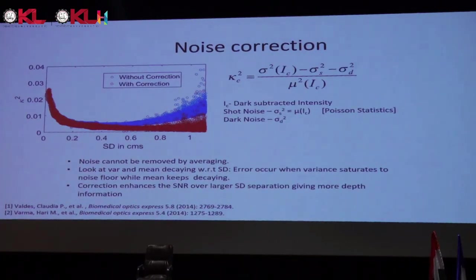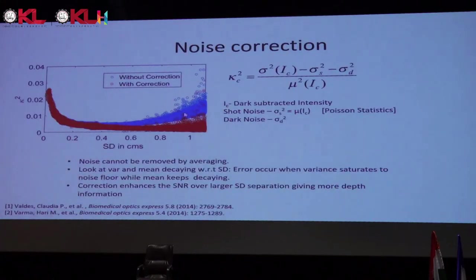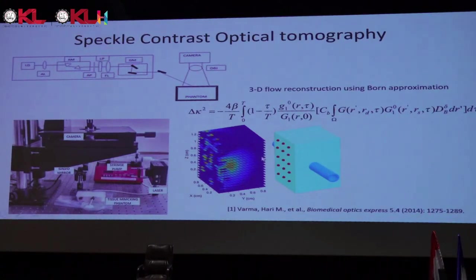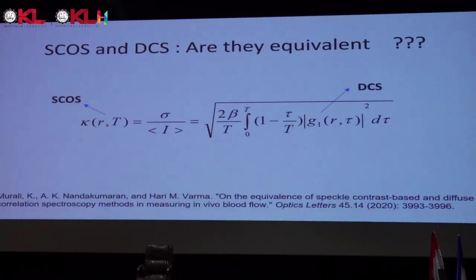Using a camera, speckle contrast can be plotted as a function of several source-detector separations. You put a focused laser source on the forehead and take measurements at different distances — these are called source-detector separations. Diffusion theory says the further the detector from the source, the deeper the photons collected, which is called spatially resolved measurement. You can then do optical tomography by placing multiple sources or scanning and using more detectors, allowing reconstruction of structures like tubes embedded in a phantom block.